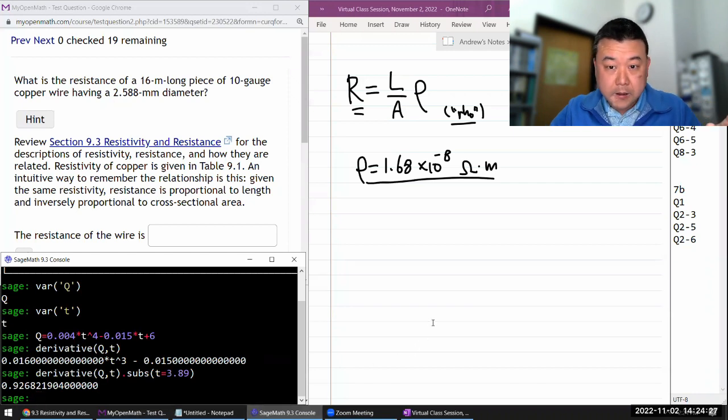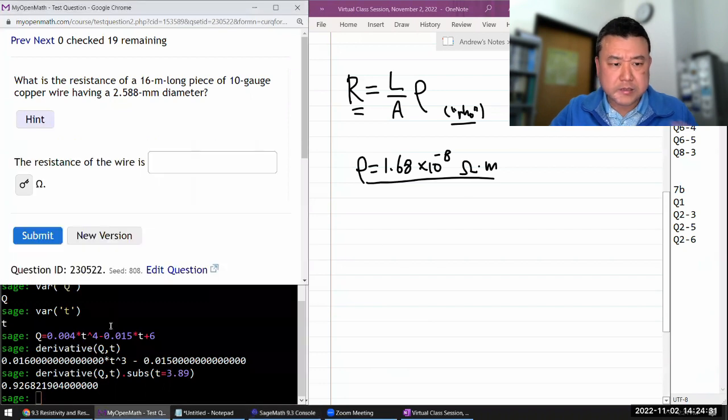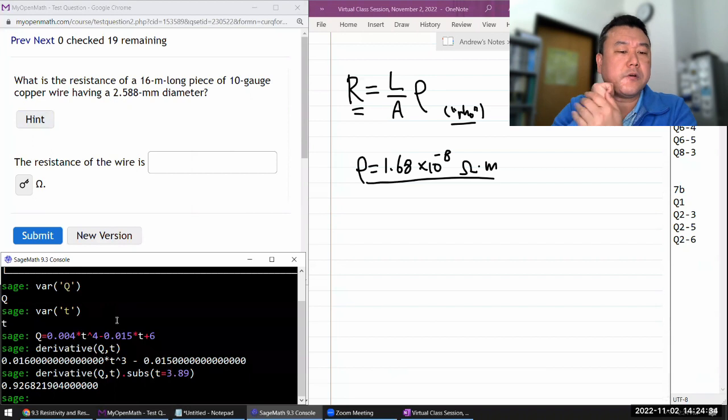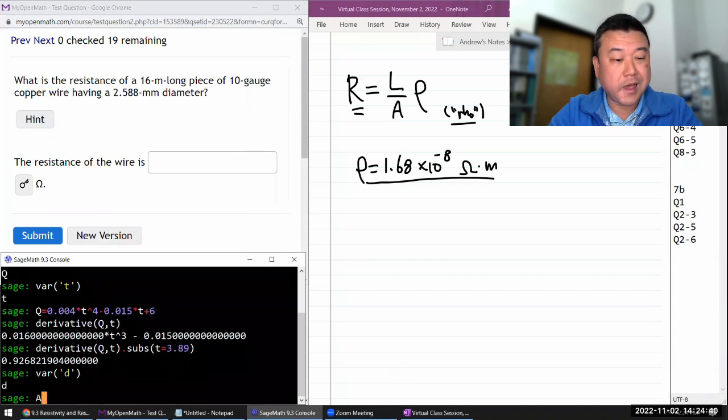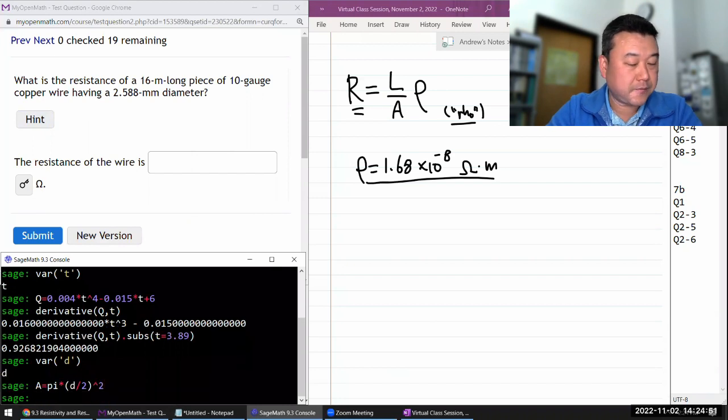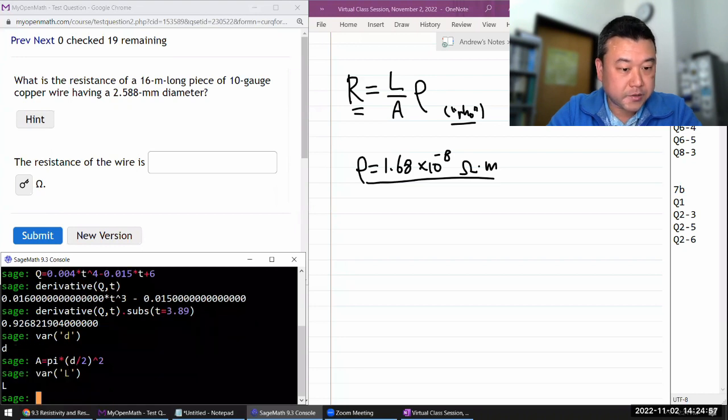Okay, so I think I have everything. I think I'm going to do all the math in SageMath. Because all I really need is a formula for area. So let me write it in terms of the diameter. So area of a circle, I'm assuming it's a circular cross section, is pi times radius, which is diameter divided by 2 squared. So that's formula for area.